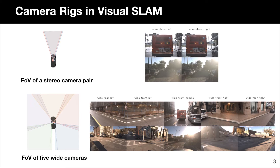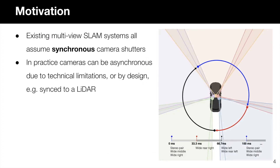One natural way to address this limitation is by using multiple cameras. With a much larger field of view, multiple cameras can make more observations of the surrounding environment and perform more robustly in complex real-world scenes. However, existing multi-view SLAM systems all assume that the multiple cameras fire at the same time. In practice, the multiple cameras can be asynchronous due to technical limitations or by design.